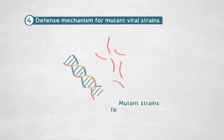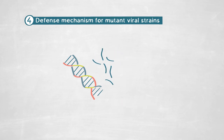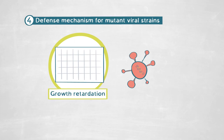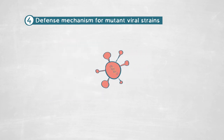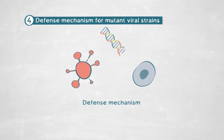We then generated mutant strains for these viral-like regions in the host chromosome. When we infected them with our virus, we observed much more acute symptoms of the viral infection, translating into a very strong growth retardation. Altogether, this means that these viral-like regions already present in the host chromosome encode for a new and unknown defense mechanism that not only provides defense for the host, but also allows the development of coexistence between the virus and the host.